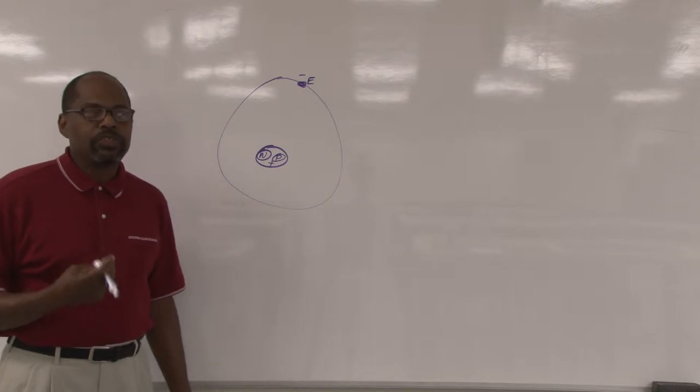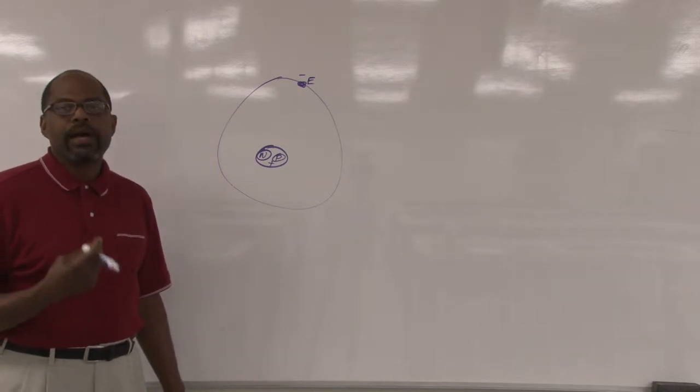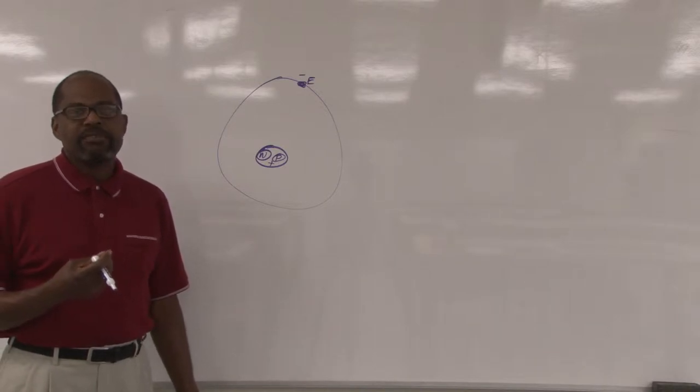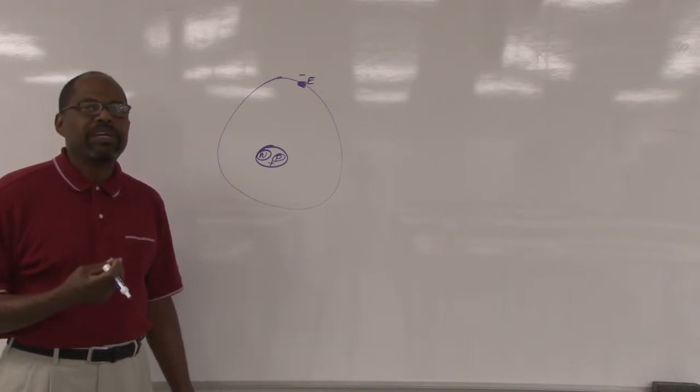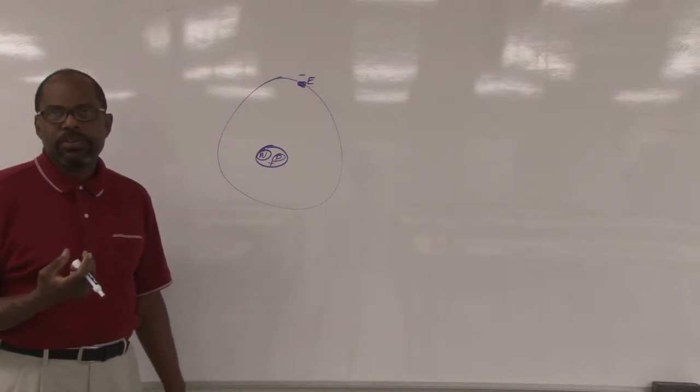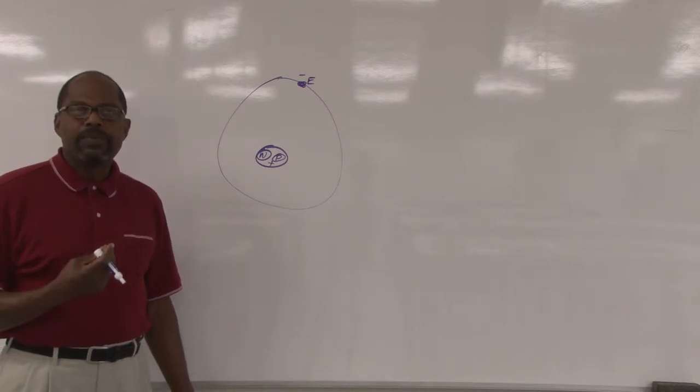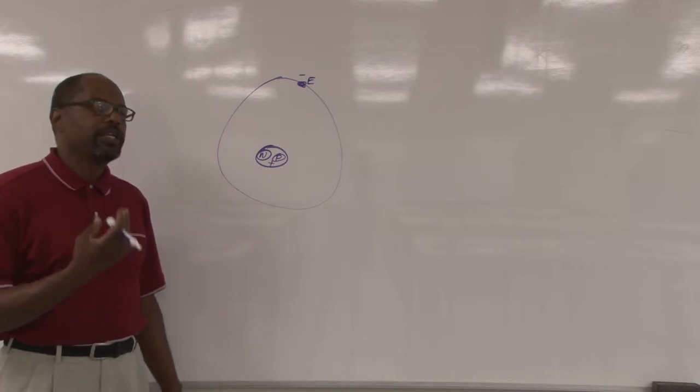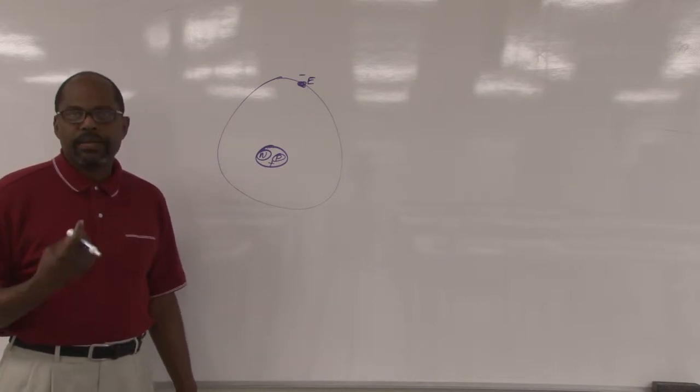Things that only have one or two electrons in this outer shell become a good conductor. If it has five or six, it becomes a good insulator. Things that you want to stop current flow would be an insulator, and conductors would have only one or two electrons.